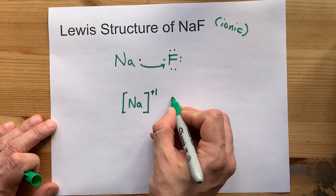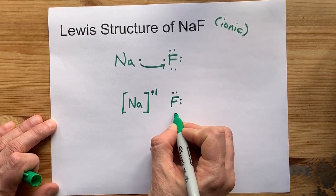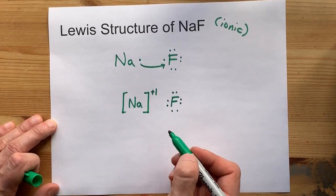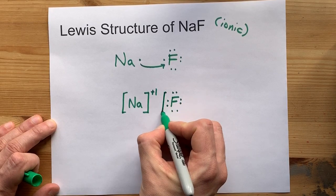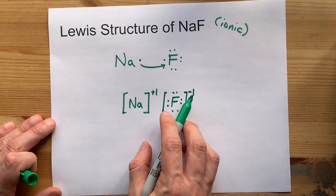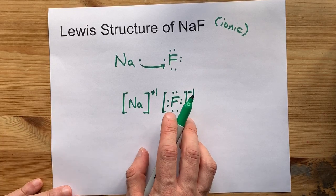Fluorine, on the other hand, brought seven valence electrons and now has the eighth one that came from sodium. It also gets square brackets because it accepted a new electron and gets a charge of minus one.